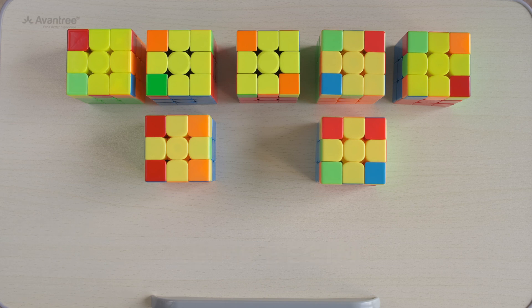After completing the F2L stage, you will encounter 1 of 57 patterns. This means 57 algorithms are needed for each case. Now thankfully, there is an easy way to do this with just 10 algorithms.